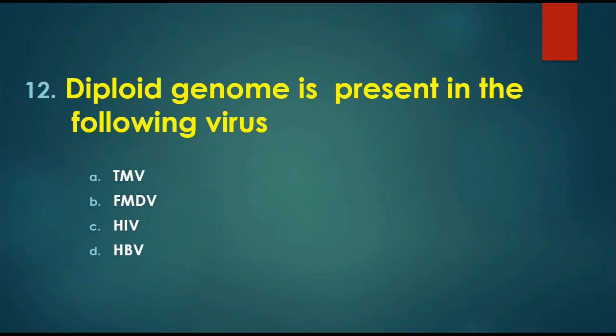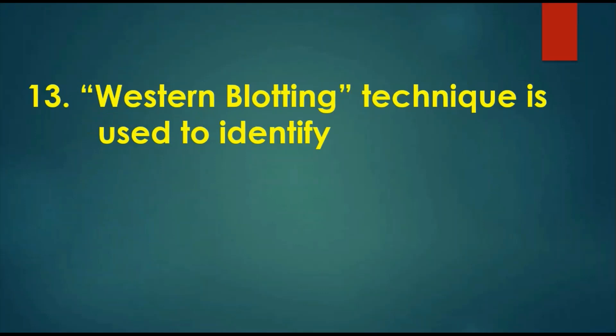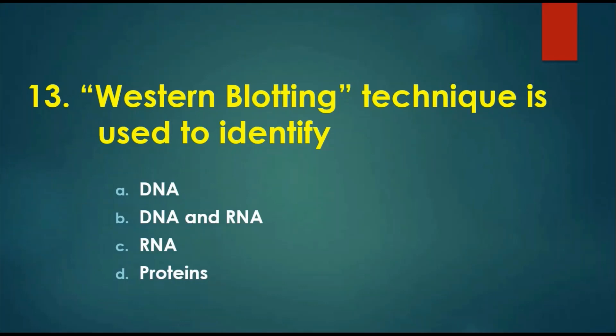Question 12: Diploid genome is present in which virus? Options are: A) TMV (Tobacco Mosaic Virus), B) FMDV (Foot and Mouth Disease Virus), C) HIV (Human Immunodeficiency Virus), D) HBV (Hepatitis B Virus). TMV has single-stranded RNA. FMDV is also a single-stranded RNA virus. HIV is also single-stranded RNA. The answer is HBV — Hepatitis B Virus — which possesses double-stranded DNA as its genetic material.